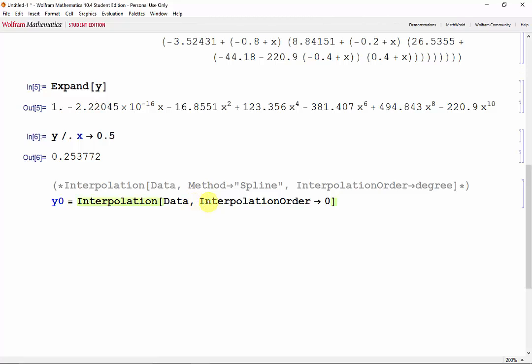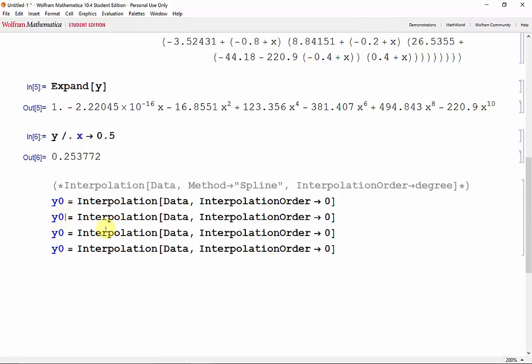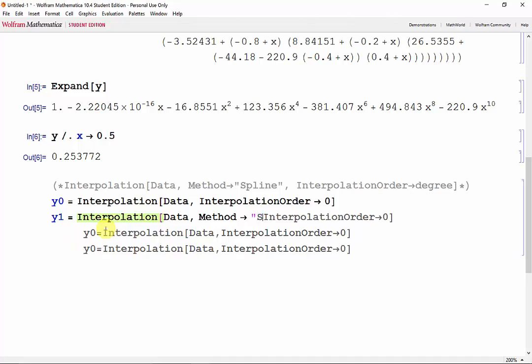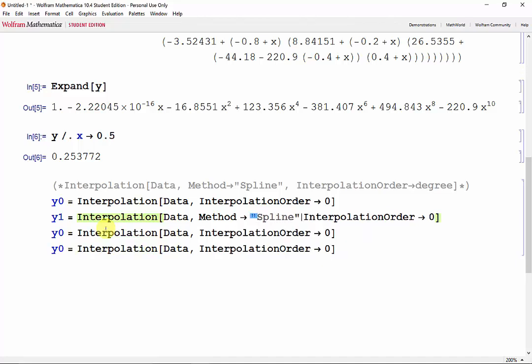For the others, however, we do need to define a method. So to save some time, I'll copy and paste this, and just make modifications. So for first degree, we need the method spline, and the interpolation order 1.